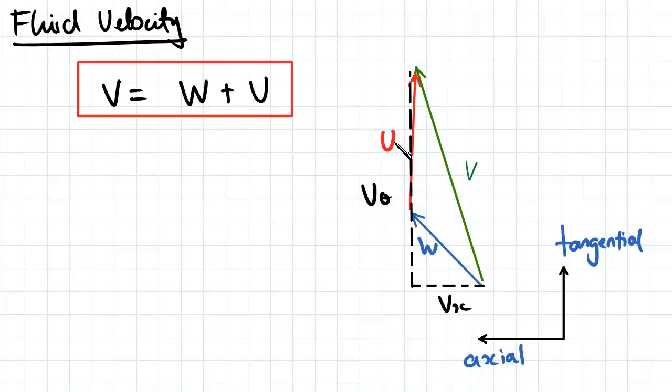Using Pythagoras' theorem, clearly V squared is going to be equal to our tangential velocity squared plus our axial velocity squared.